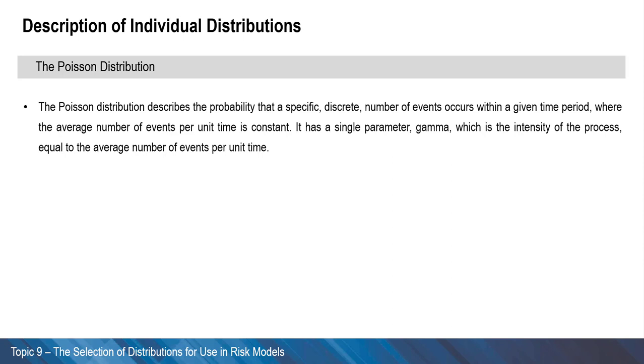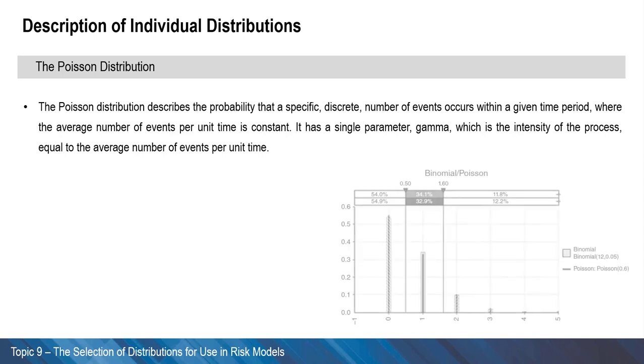The distribution is the continuous time counterpart to a binomial distribution. For example, one may capture the number of times that a car breaks down in a year as binomial of 12 and 5%, corresponding to a 5% chance of a single breakdown each month, and an average of 0.6.